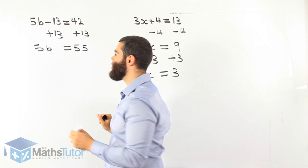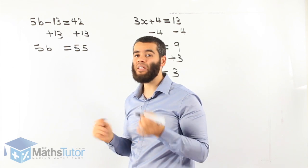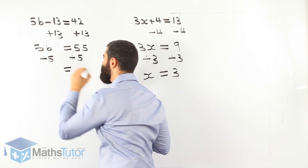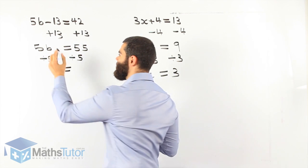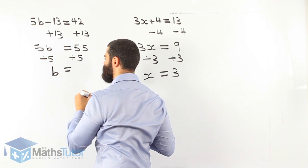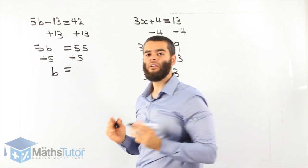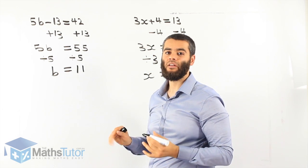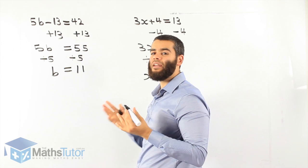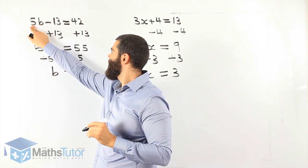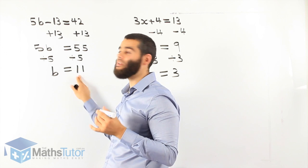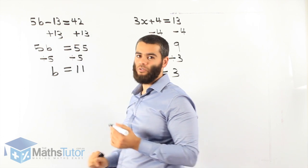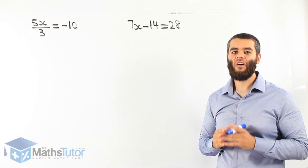What do we do now? We divide, because 5b is 5 times b. So divide by 5, and divide by 5 on the other side. Remember, what we do to one side we do to the other. 5 divided by 5 leaves us with 1b. 55 divided by 5 is 11, so b equals 11. Let's check: 5 times b — b is 11, so 5 times 11 is 55. 55 take away 13 is 42. It works!